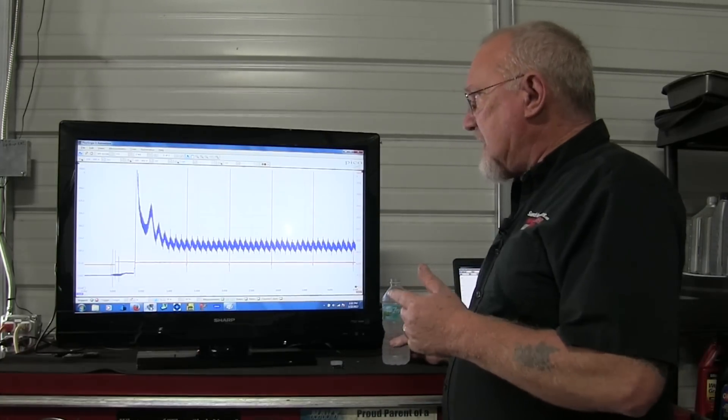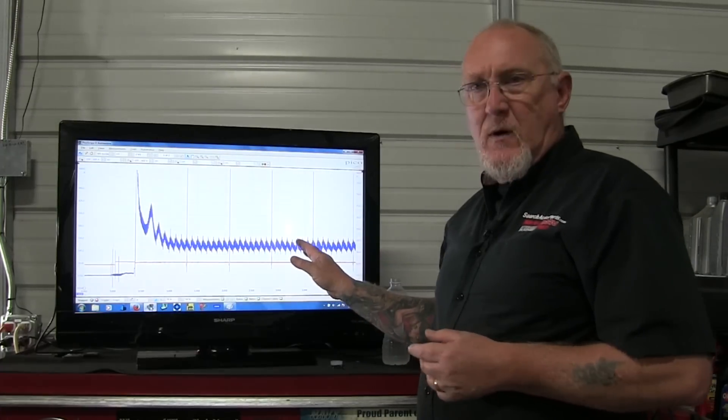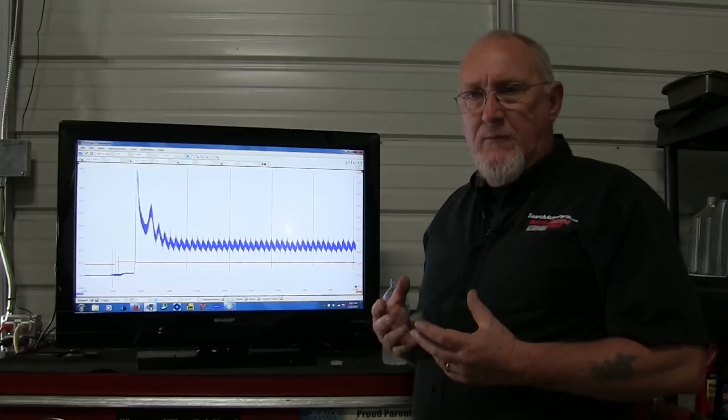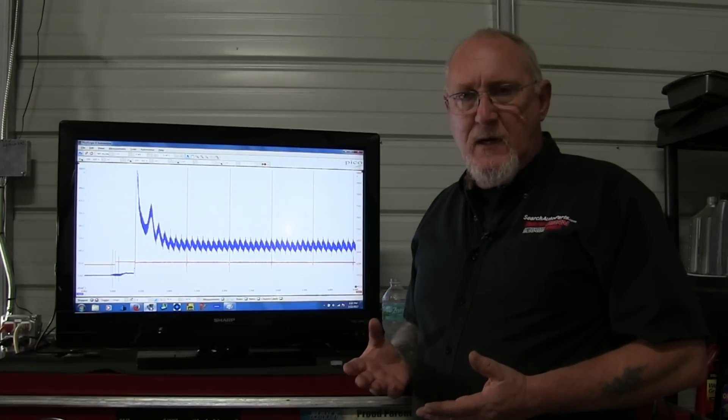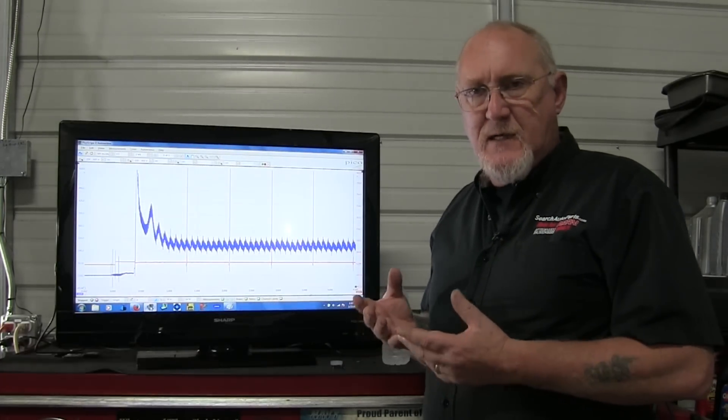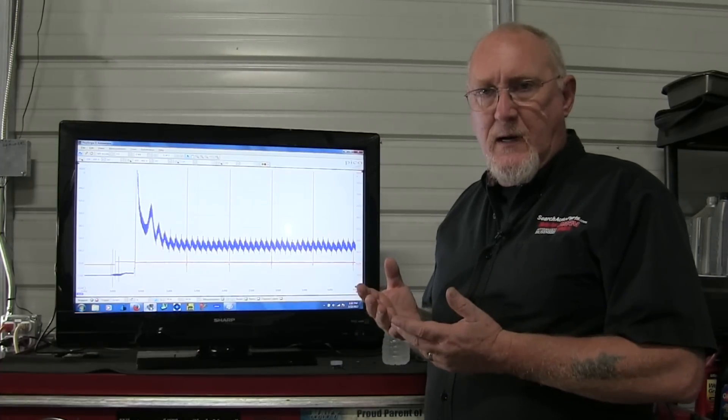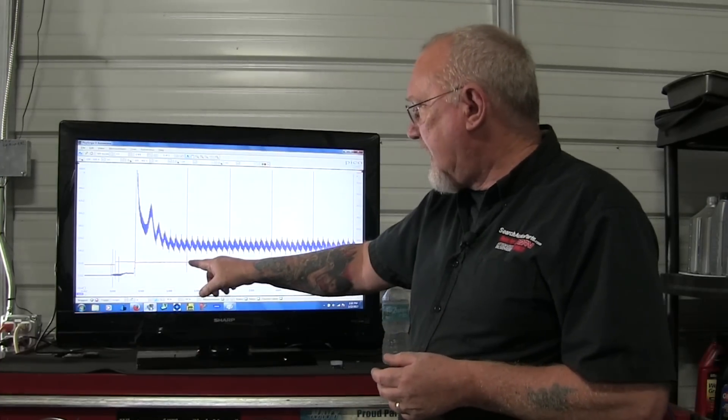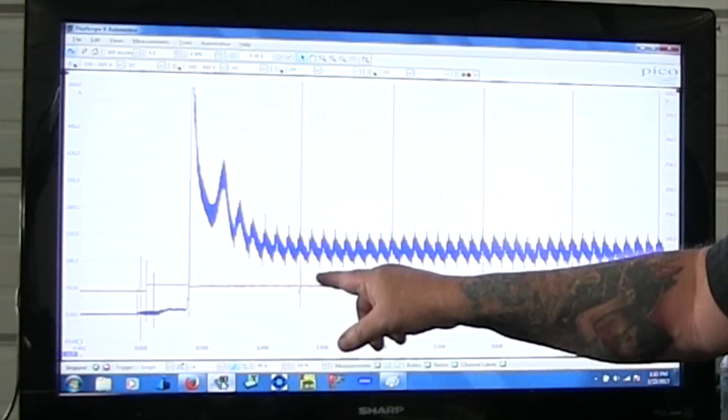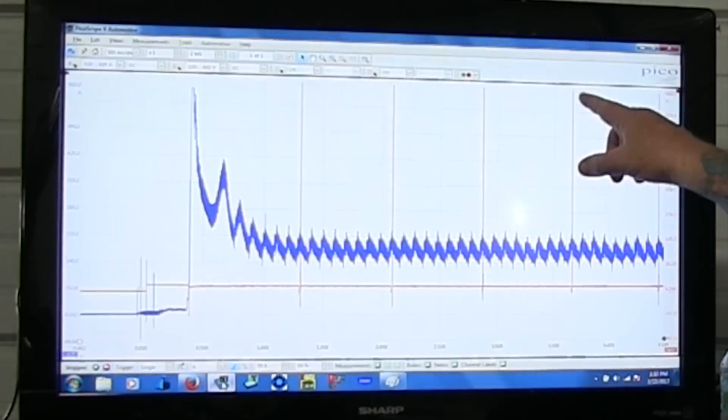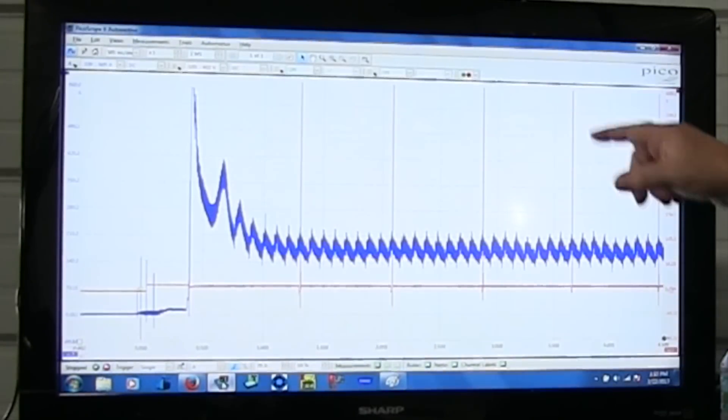And you'll probably recognize the blue trace, very similar to what we saw in the scope use video a couple episodes ago. All of these individual peaks represent the increased momentary increases of current draw, current load on the starter, as each piston comes up on top dead center of its compression stroke.